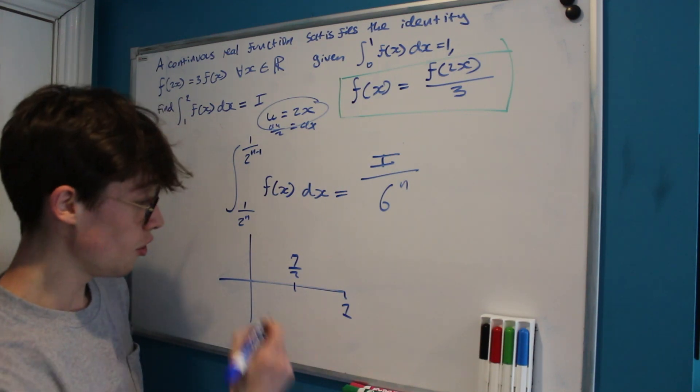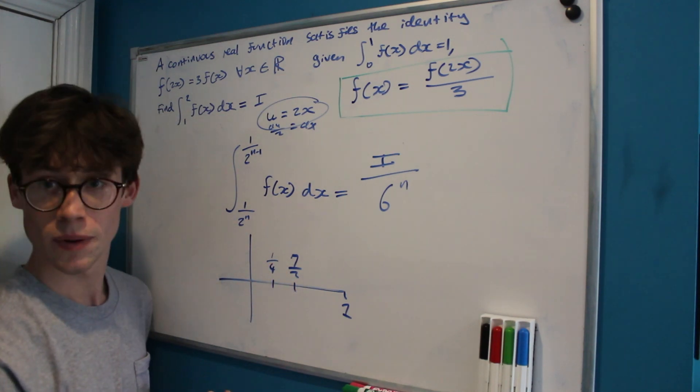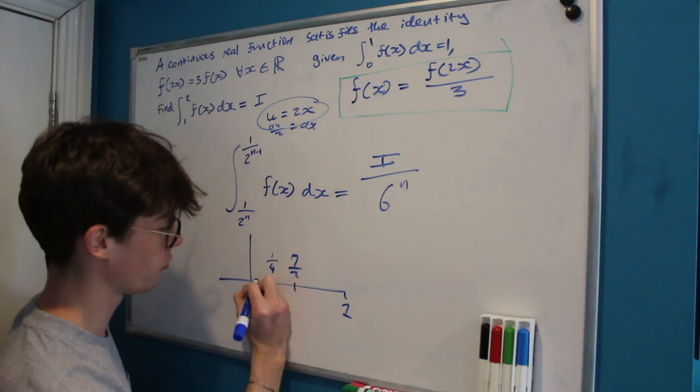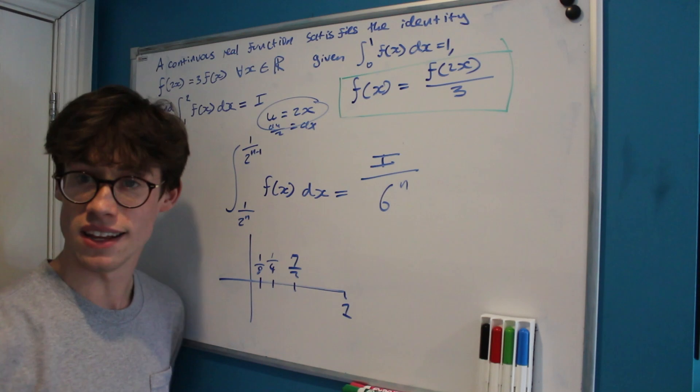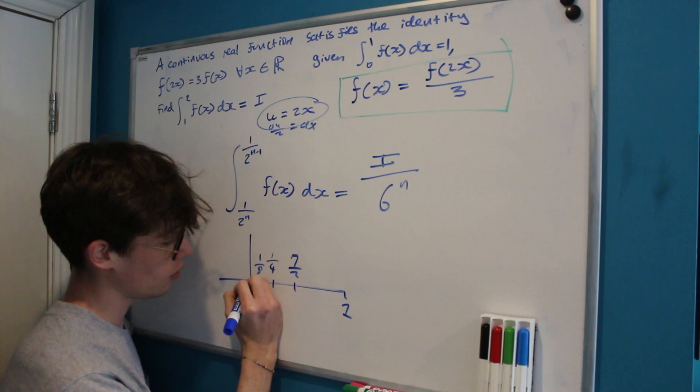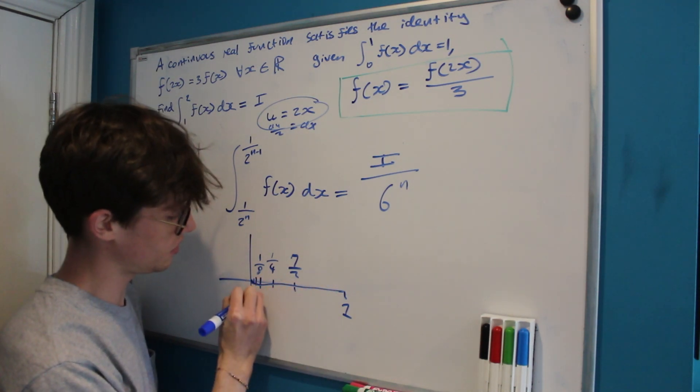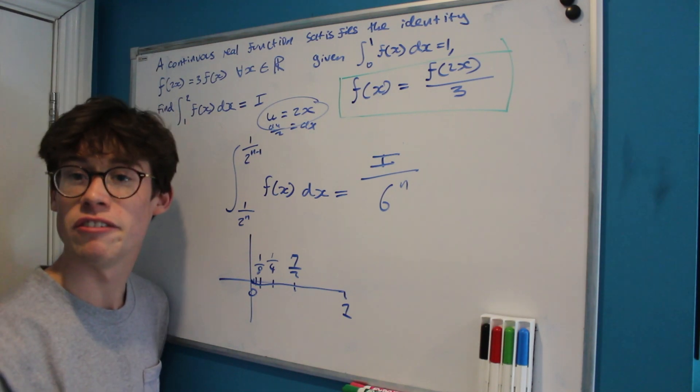When n is equal to 3, we're going from a quarter to an eighth. And if we take the limit as n approaches infinity, we will eventually reach the integral from 0 to 1 of f dx.